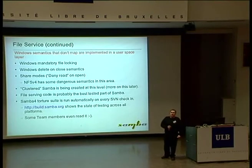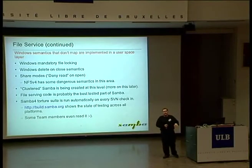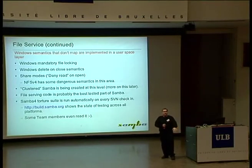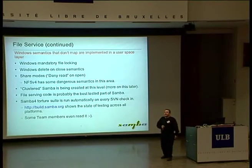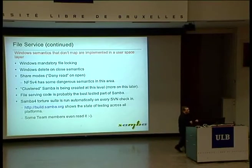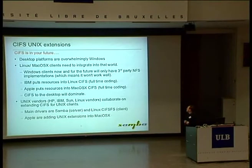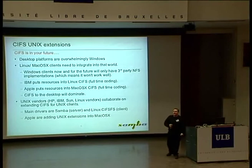The file serving code — I can proudly say — is probably the best-tested part of Samba. We actually have a torture suite which is part of Samba 4, and the nice thing about that suite is it's run on every single commit on about 20 or 30 different systems. So if you break something, you find out immediately. People occasionally actually read the email that comes out — not often, but we usually have a good view of the health state of Samba. I think we're broken on 13 platforms right now, but they're platforms that suck anyway.